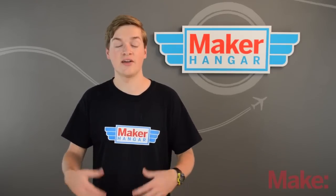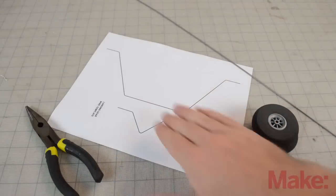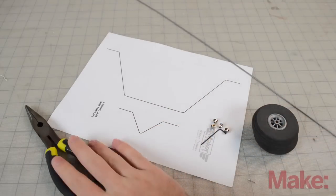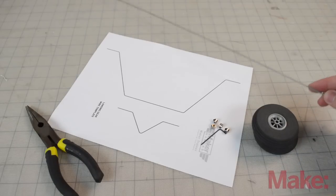The next modification is putting landing gear on the plane. This allows you to take off and land from the ground. Okay so here are the parts you're going to need for the landing gear. The second sheet of the modification page you're going to need some pliers.